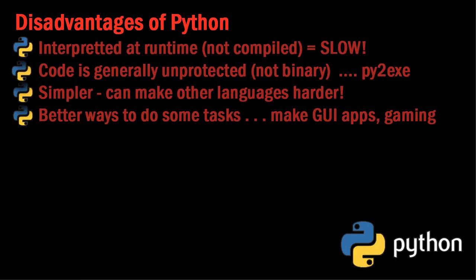Another disadvantage is that the code is generally unprotected. It's basically your source code being put out there — it's not binary code, so you're not protecting your code from others seeing it. There are some tools, such as py2exe, that allow you to create an executable and other methodologies to protect your code.